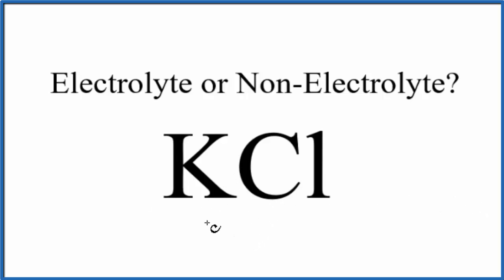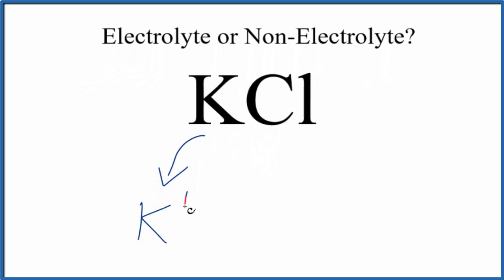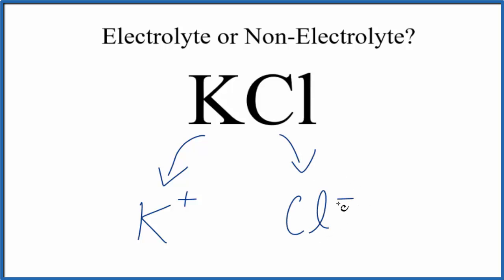Potassium ions — potassium is in group 1 on the periodic table, so potassium forms 1+ ions, the potassium ion. For Cl, that's in group 17, also called 7A. That will form 1- ionic compounds — this is the chloride ion. And because we've dissolved them in water, we're going to write AQ for aqueous after these to show they're dissolved in water.